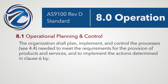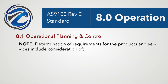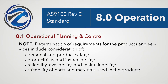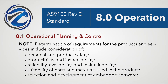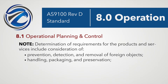Now Rev D is 8.1, operational planning and control, and it includes the same items plus several new requirements in the note: product obsolescence — that's new; prevention, detection, and removal of foreign objects — that's new; and handling, packaging, and preservation — that's also new. Recycling or final disposal remains the same.